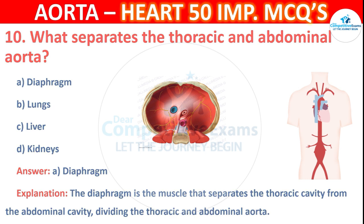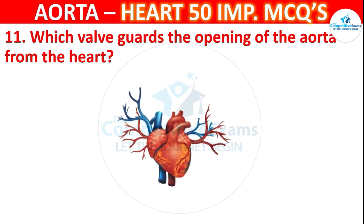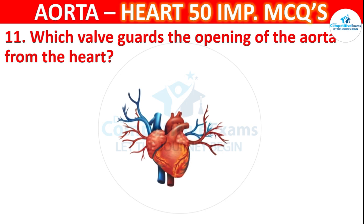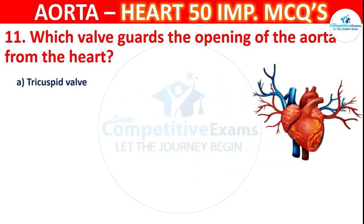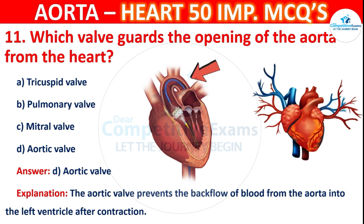Question number 11: Which valve guards the opening of the aorta from the heart? Options are tricuspid valve, pulmonary valve, mitral valve, or aortic valve. The correct answer is D — aortic valve. The aortic valve prevents the backflow of blood from the aorta into the left ventricle after contraction.